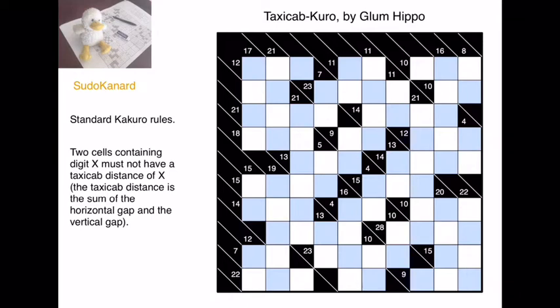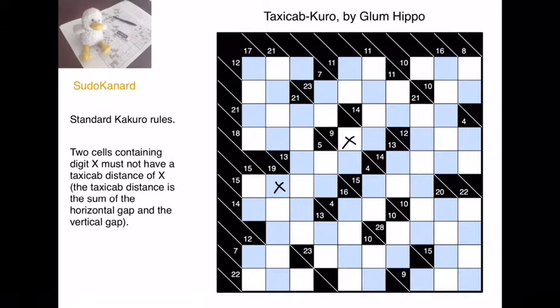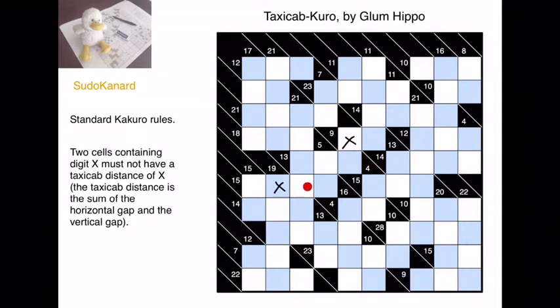But first let me state the rules. We have standard Kakuro rules, and I assume that you're familiar with those. The variant states that two cells containing the same digit X must not have a taxicab distance equal to X. The taxicab distance between two cells is the sum of the horizontal gap and the vertical gap. For example, if we take this cell and this cell, the horizontal gap is 3 and the vertical gap is 2, so the taxicab distance is 5.